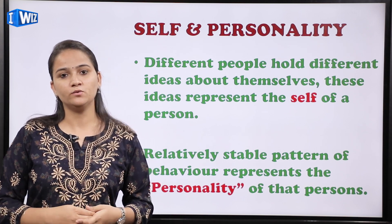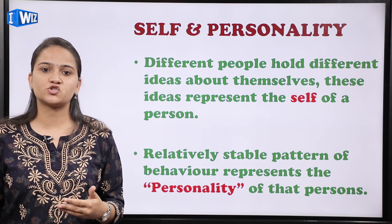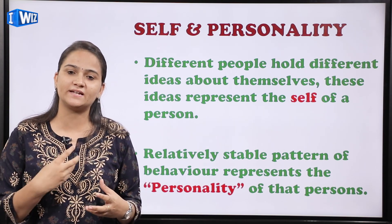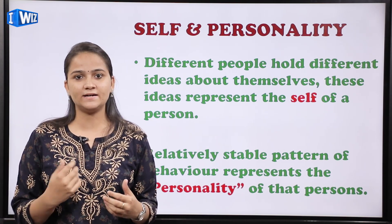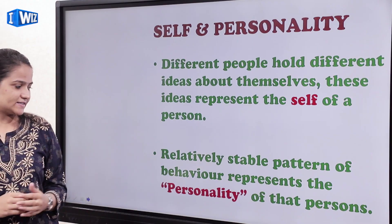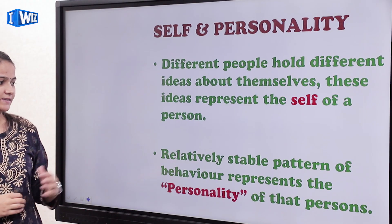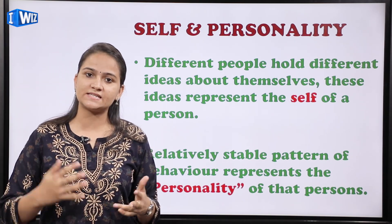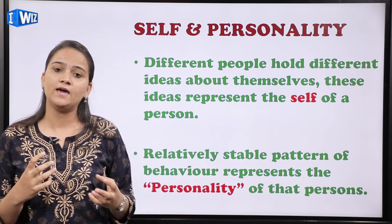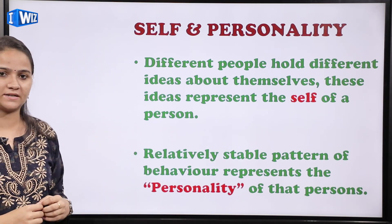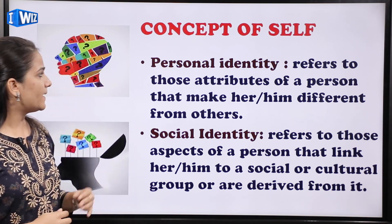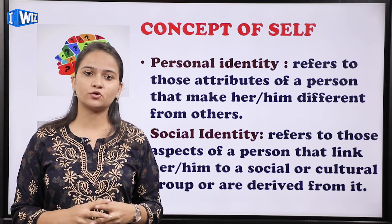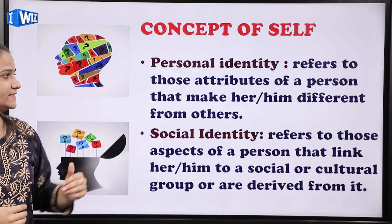अगर मैं अपने बारे में बात करूँ, तो अगर मैं कहूँ कि मैं एक extrovert हूँ — इनसान के ऐसे traits stable हो जाते हैं, तो ऐसे different traits मिलकर इनसान की personality को form करते हैं। अब हम बात करेंगे concept of self की। इसके अंदर दो तरह की identities होती हैं: या तो आपकी personal identity है, या फिर social identity।